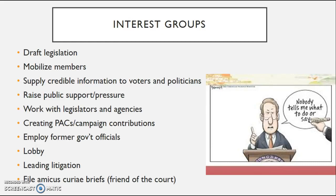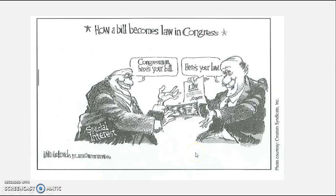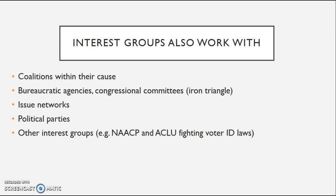Litigation tends to be the last means. Other ways that interest groups influence policy include filing amicus curiae briefs — being a friend of the courts — where they raise an additional viewpoint on a topic that matters to them. Some interest groups are going to have more ability and more access to work with politicians, but they will certainly work with coalitions, within the Iron Triangle, and through issue networks, working with political parties.